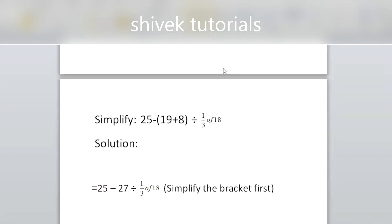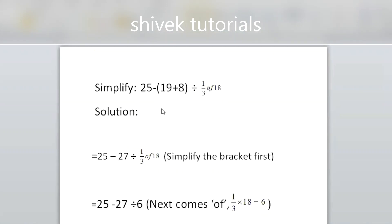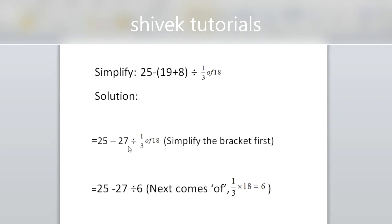Our first problem. In this problem, we are going to solve the bracket first: 25 minus (19 plus 8). So we solve the bracket first — 19 plus 8 is 27. We are writing the other terms as they are, only solving this bracket term. Instead of (19+8), we write 27. The bracket is gone.